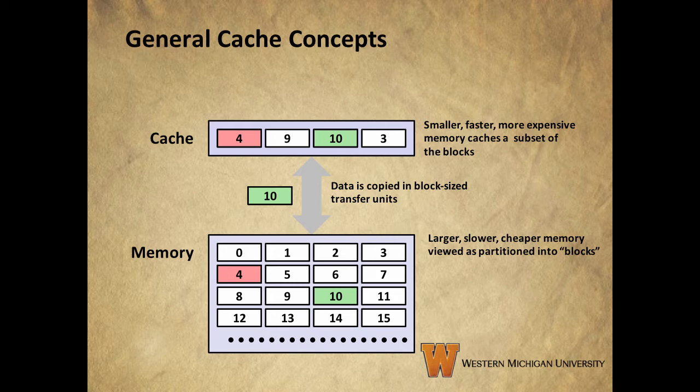Now we'll talk about some general concepts of caches. A well-written program with good locality has a high chance of referencing the same objects in memory multiple times. That means we can put these objects, most likely to be referenced often, into the faster memory at a higher level of the memory hierarchy. In this illustration, we see the main memory partitioned into blocks. We can copy the data in block-sized units to the faster cache memory. The idea is that because of locality, if a program references data in block 10, we know it's likely to reference block 10 again in the near future, so we'll move block 10 to the cache so it can be accessed more quickly. When a block a program needs is already in the cache and we don't have to move any data from memory, it's referred to as a hit.